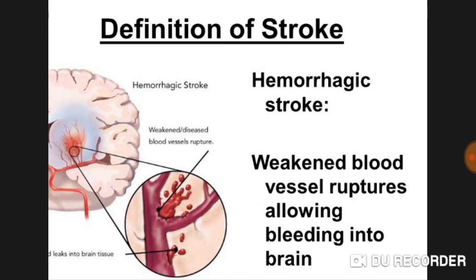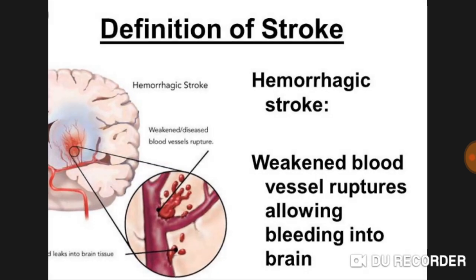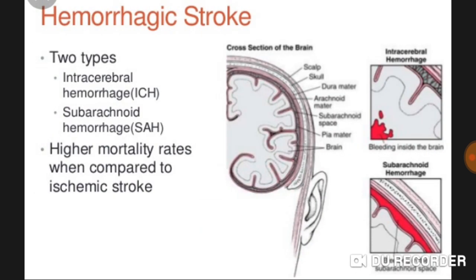Now, what is hemorrhagic stroke? Blood vessels rupture, allowing bleeding into the brain. Hemorrhagic stroke is when weakened or diseased blood vessels rupture — as seen in the picture. Her case is also the same type of hemorrhagic stroke.